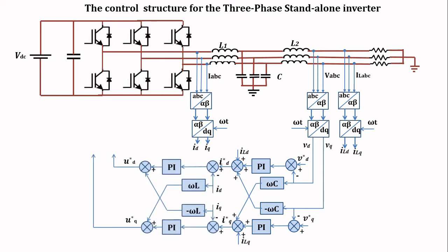In the current loop, the generated reference current ID and IQ are compared with the actual inverter current to get the error. Then the error is sent to the PI controller to generate the reference voltage. Finally, the reference voltage is converted from DQ to ABC and sent to PWM to generate the control signal for the 3-phase inverter.